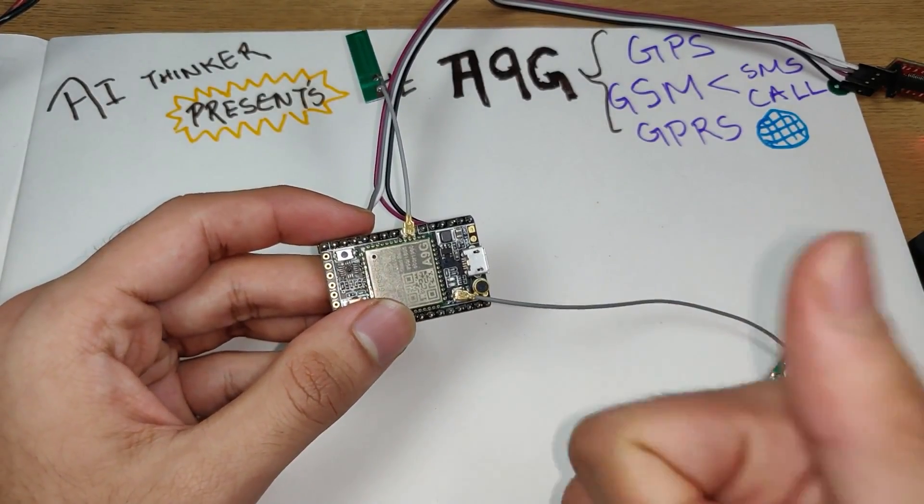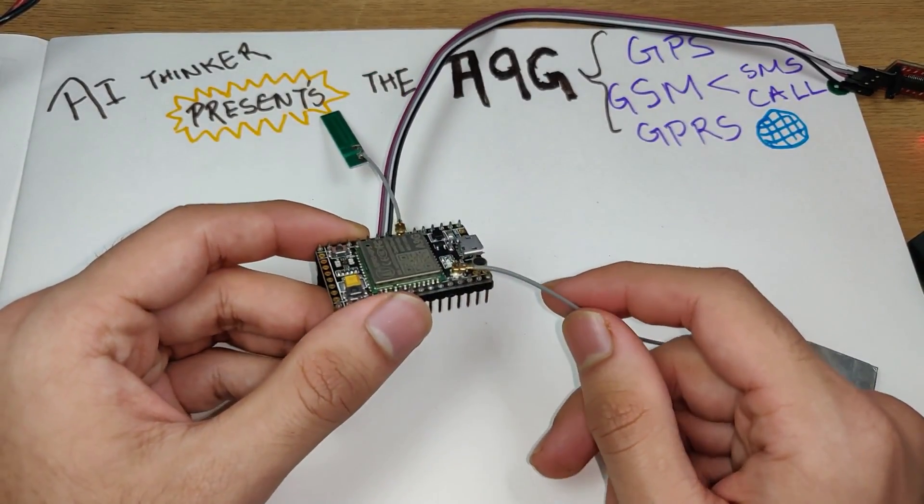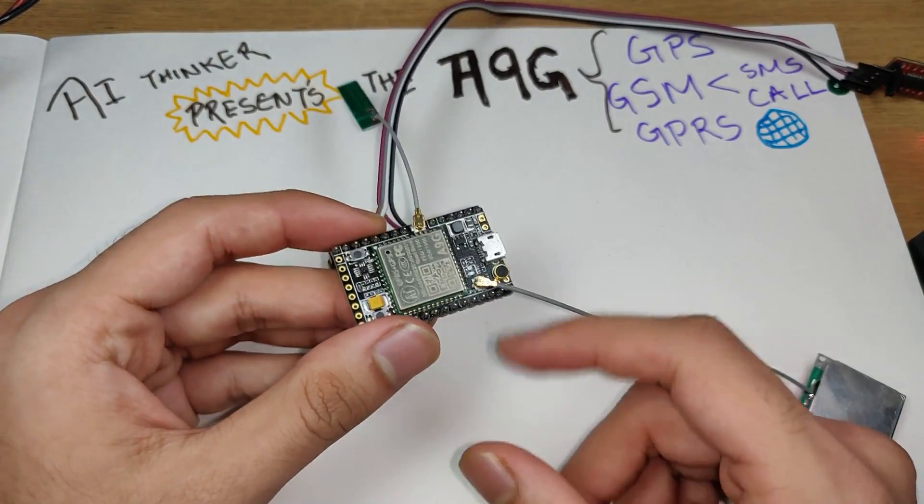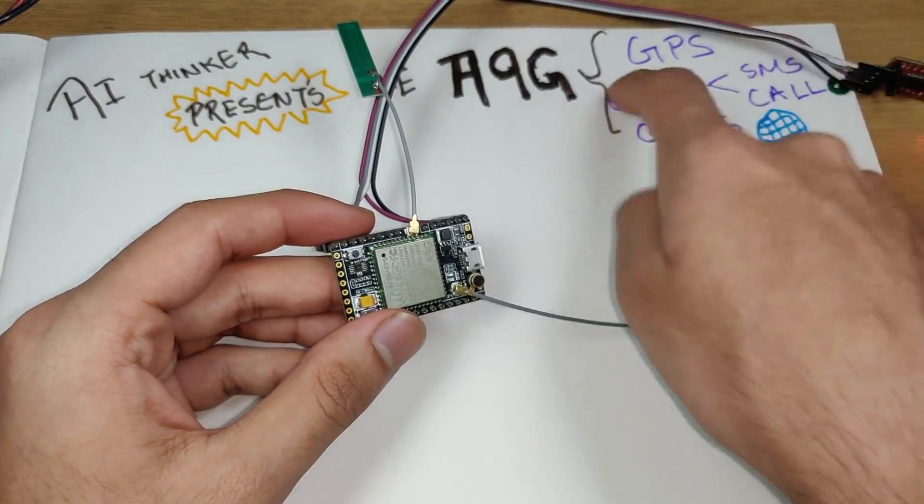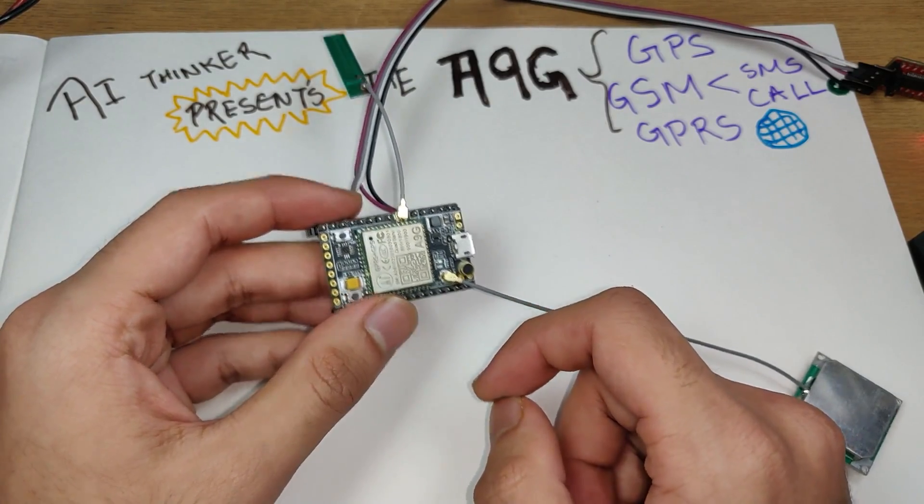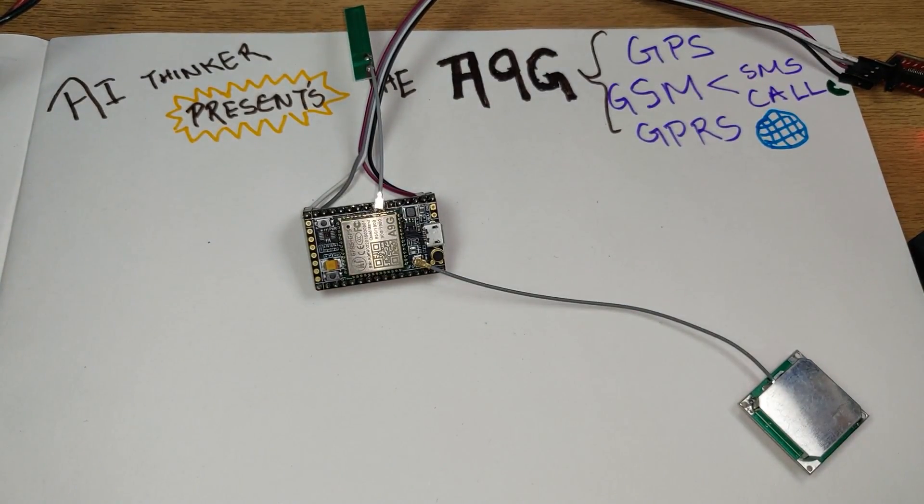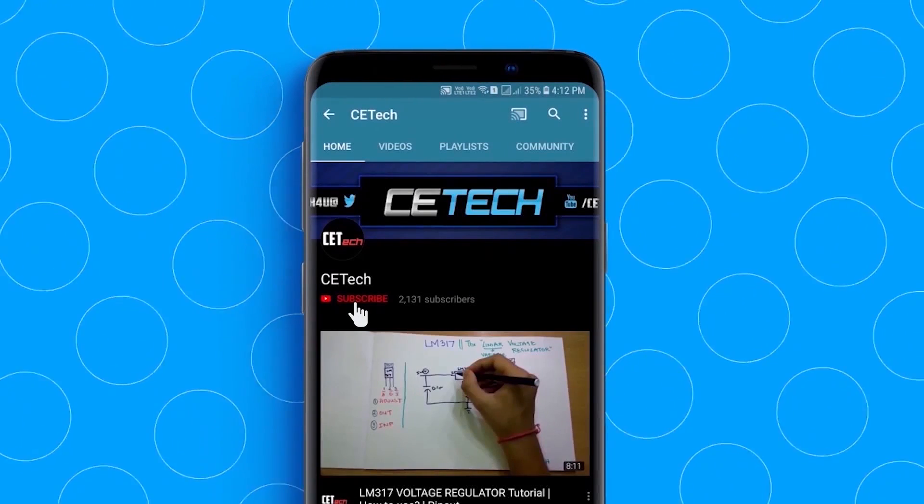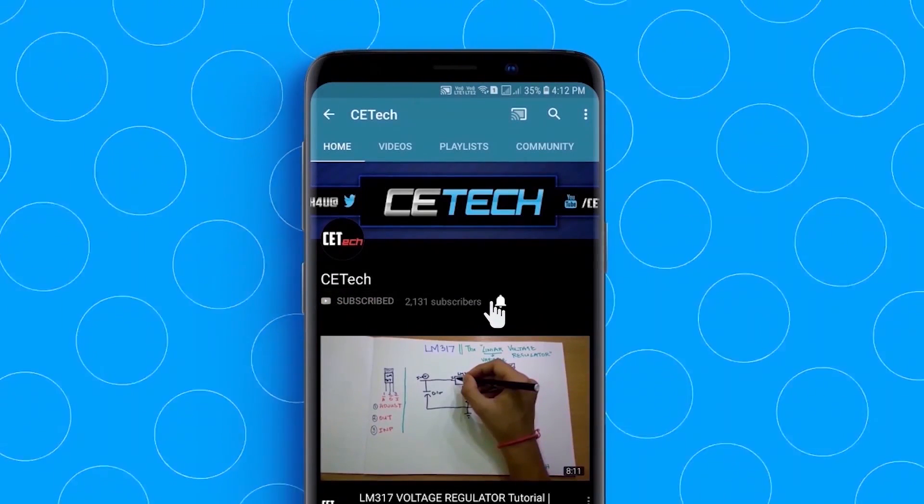That'll happen in the future. Do let me know in the comments down below if you're interested in seeing something like that. This was a short and simple tutorial of how to access GPRS and GPS features of this module. Thanks for watching. Subscribe to our channel if you haven't until now. Also hit the bell icon to stay notified. This is Akarsh signing off.